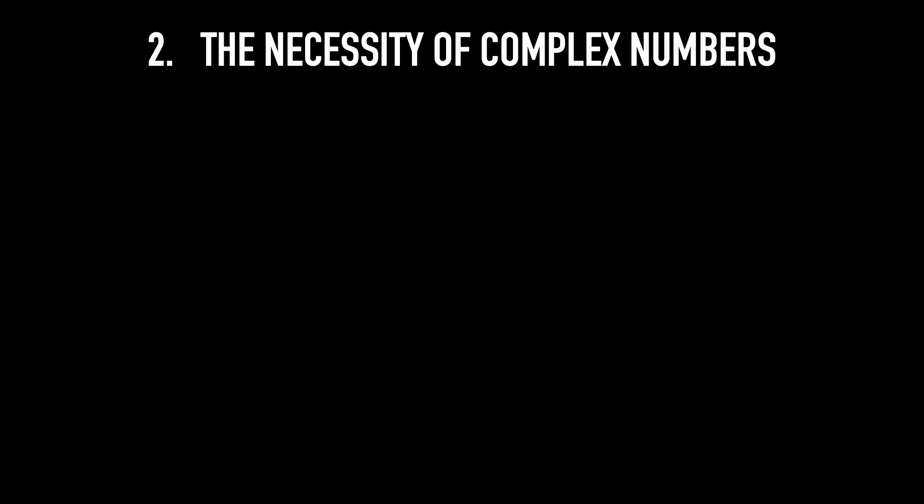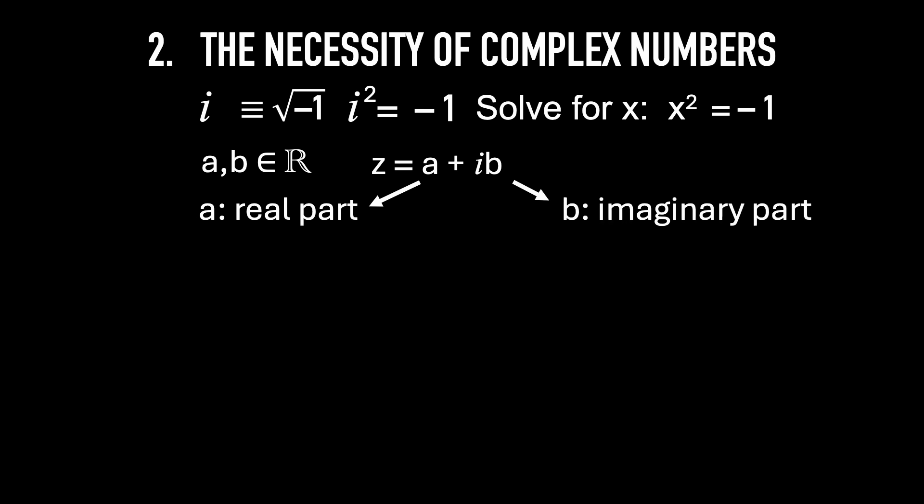The necessity of complex numbers. The complex number i is defined as the square root of minus 1, so i squared equals minus 1. It was invented to solve equations like x squared equals minus 1. From i, people created more numbers by combining it with real numbers. For example, you can have a complex number z equals a plus ib. Here, a is the real part, and b is the imaginary part. We also define the complex conjugate of z, denoted as z star: z star equals a minus ib. If you multiply z by z star, that's a plus ib times a minus ib, you get a squared plus b squared, and that's a real number.